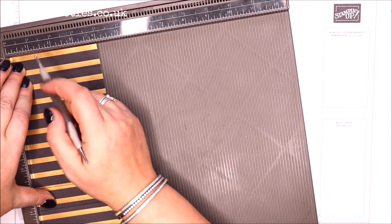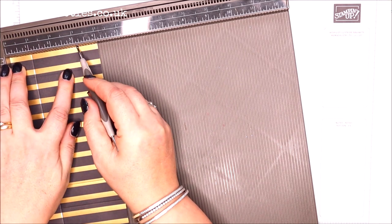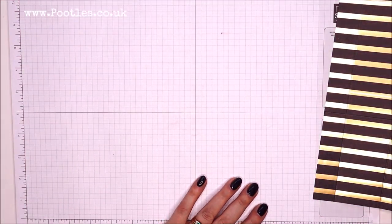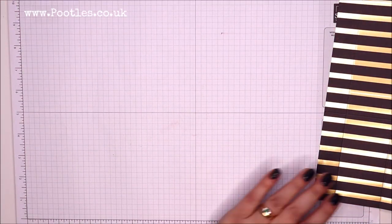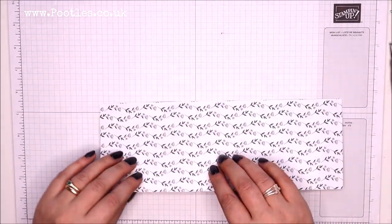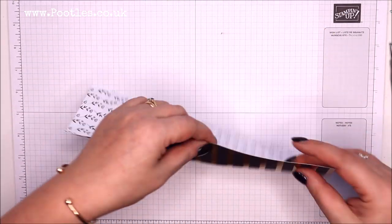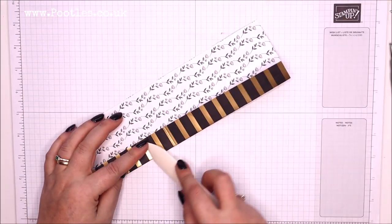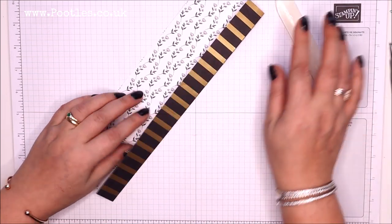Turn it around and on the short side score it at one and three inches, which is two and a half and seven and a half centimeters. I'm going to burnish my score lines.